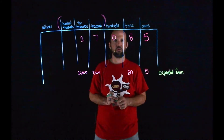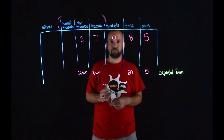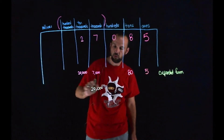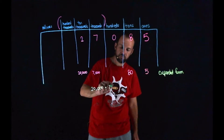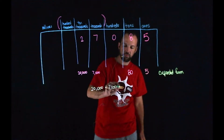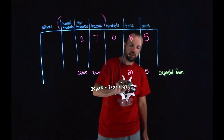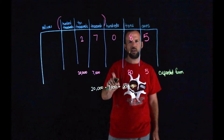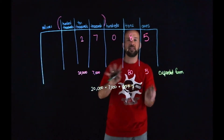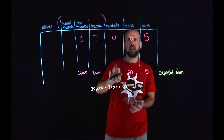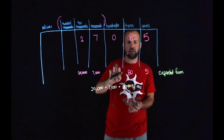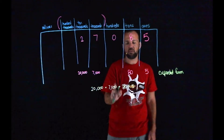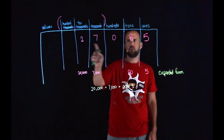So now that I have the value of all my digits, how could I use that to write this number in expanded form? It would go something like this: I would have 20,000 plus 7,000 plus 80 plus 5. I don't have to worry about the hundreds because I don't have any hundreds in there. If I add up 20,000 plus 7,000 plus 80 plus 5, I will get 27,085.